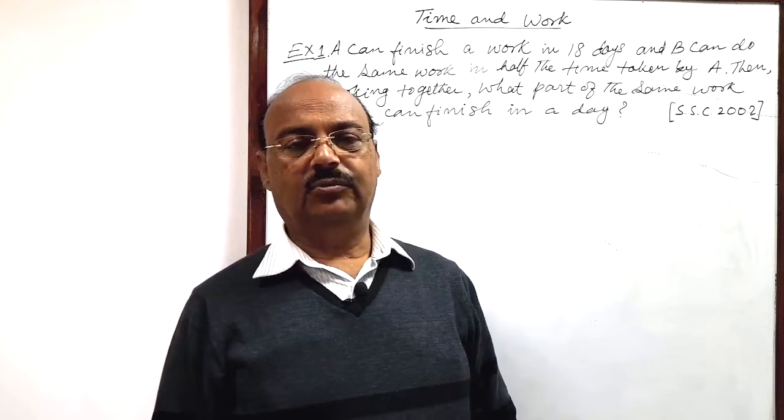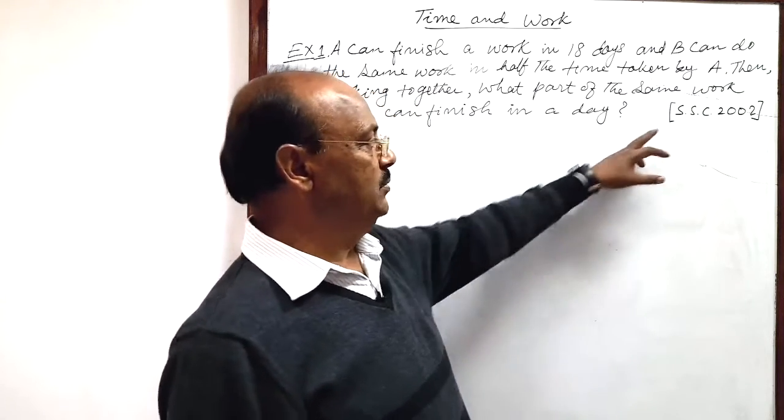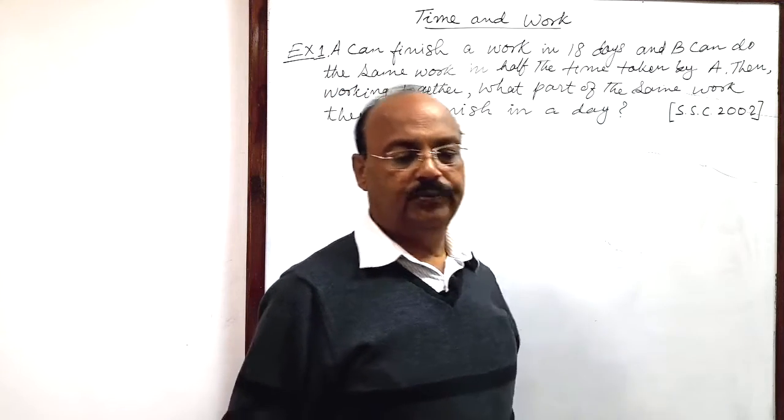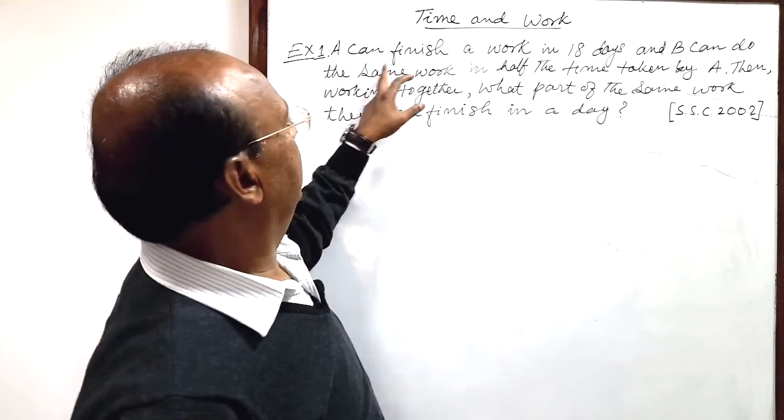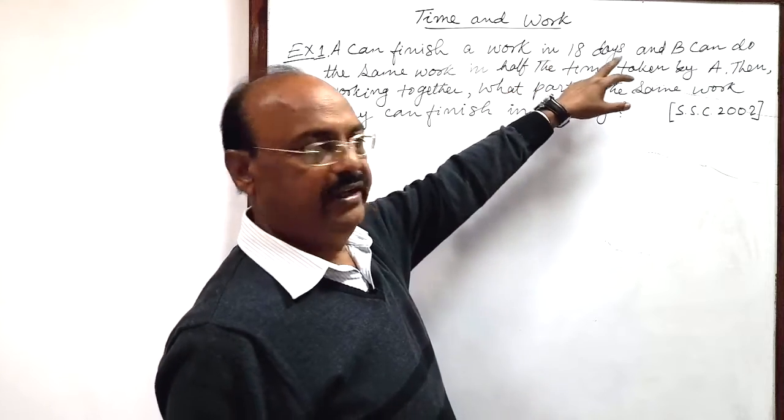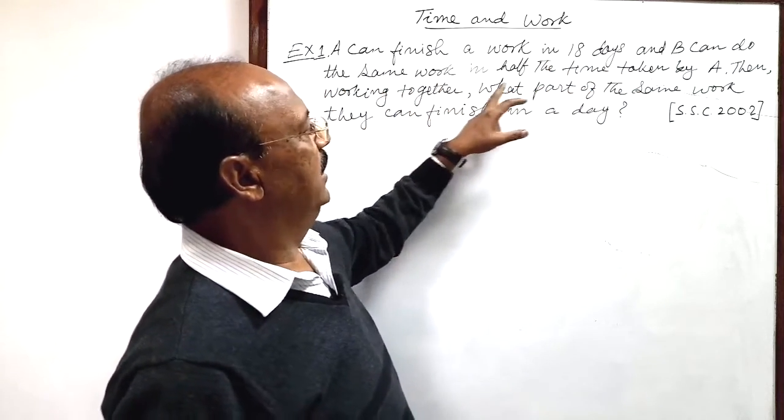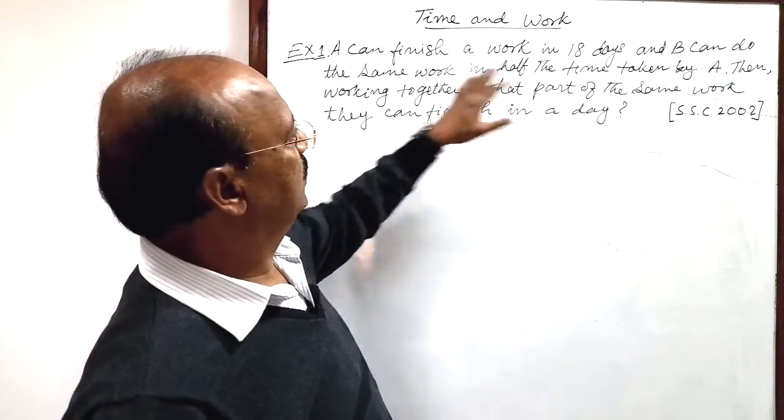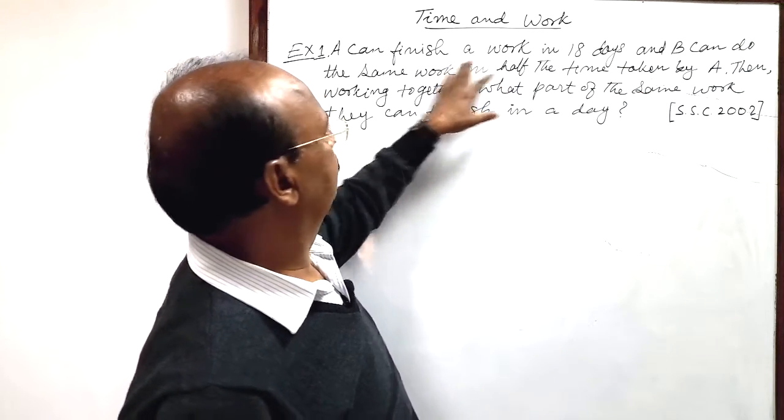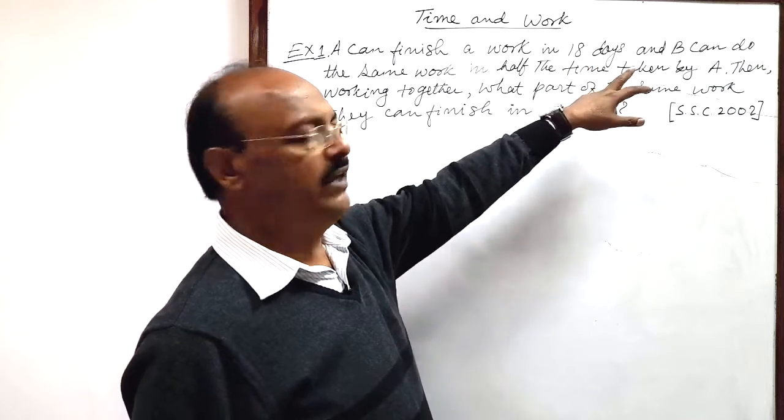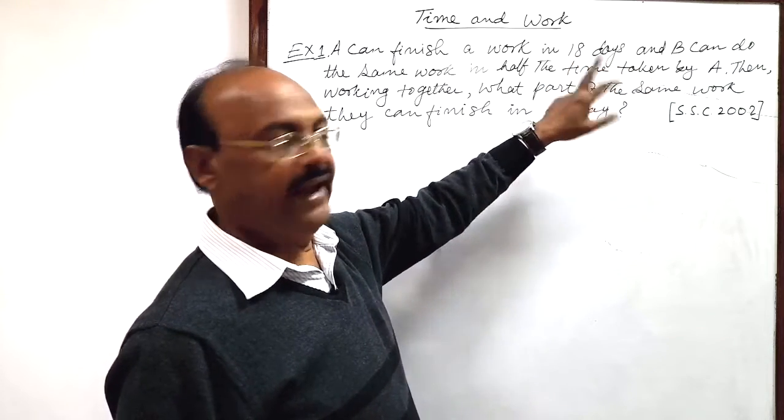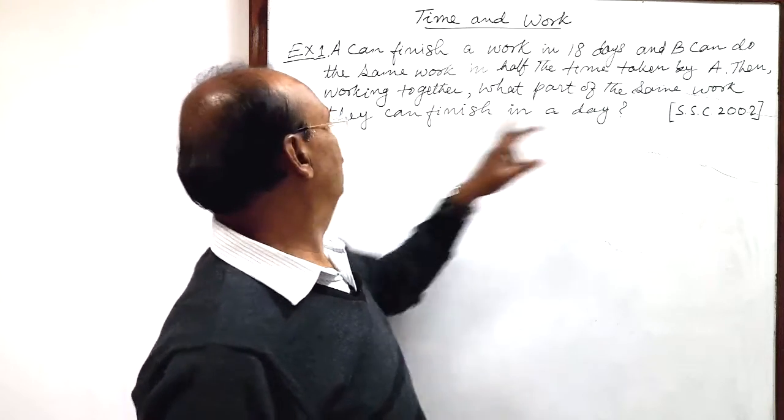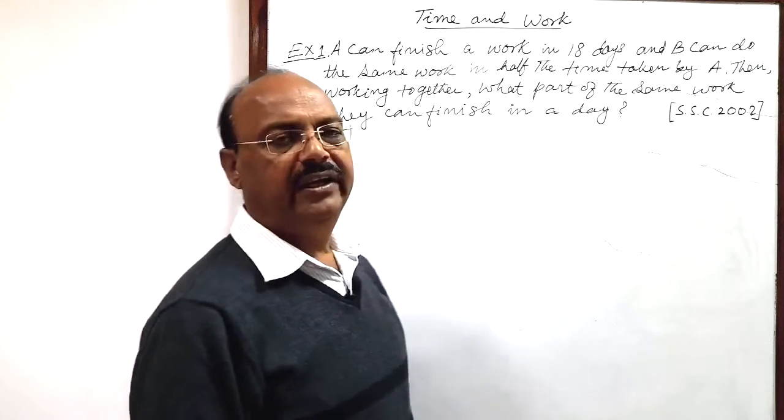Here we will start from question number one. This question has been asked in staff selection commission examination of 2002. Question is: A can finish a work in 18 days and B can do the same work in half the time taken by A. So here A is taking 18 days, B will take half of this much, means 9 days. Then working together, what part of the same work they can finish in a day?